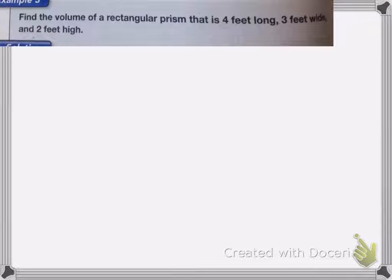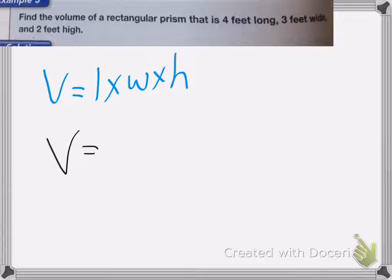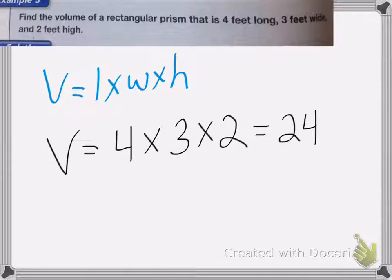All right, in this problem, we have find the volume of a rectangular prism that is four feet long, three feet wide and two feet high. So remember, again, volume equals length times width times height. So let's put in the numbers. So my volume equals 4 feet long times 3 feet wide times 2 feet high. 4 times 3 is 12 times 2 is 24. And my label is feet cubed.